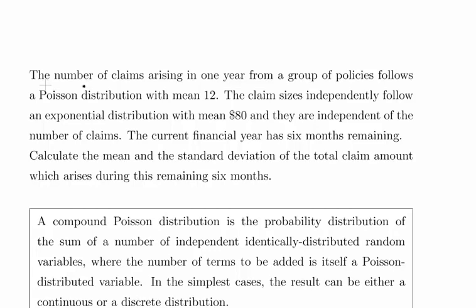What we're going to look at here is compound distribution — specifically the compound distribution of a Poisson distribution and an exponential distribution. The number of claims arising in one year from a group of policies follows a Poisson distribution with mean 12.